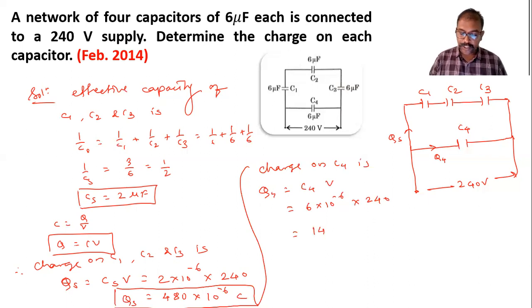it is 1440. So 6 × 240 × 10^-6, this is the charge in coulombs. So the charge on Q4. Here we get both the values.